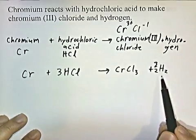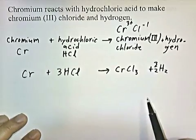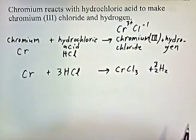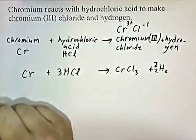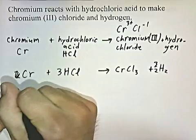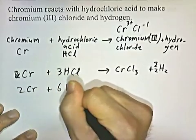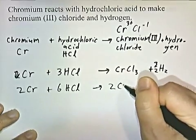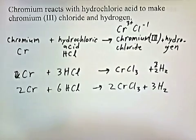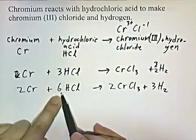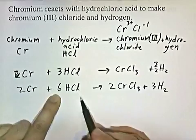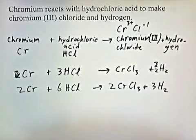To eliminate the fraction, multiply everything by two: 2 Cr + 6 HCl → 2 CrCl3 + 3 H2. Checking: two chromiums each side, six hydrogens on the left and three times two gives six on the right, six chlorines on the left and two times three gives six on the right. Balanced.